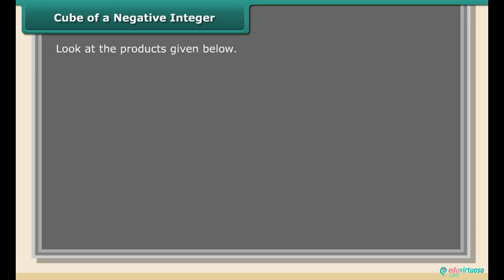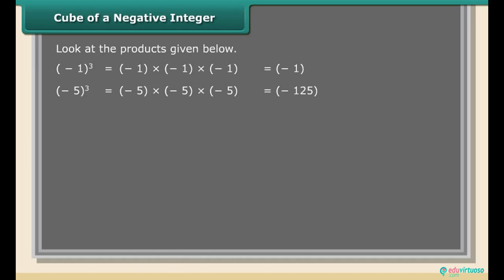Cube of a negative integer: Look at the products given below. (−1)³ = (−1) × (−1) × (−1) = −1. (−5)³ = (−5) × (−5) × (−5) = −125. (−10)³ = (−10) × (−10) × (−10) = −1000. We conclude that the cube of a negative integer is negative.